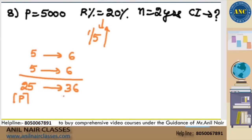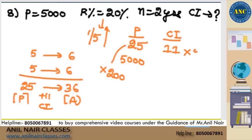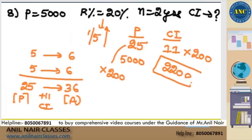So this is nothing but 25 and this is nothing but 36. Principal is 25, amount is 36, and the extra is nothing but CI. That means if the principal is 25, compound interest is 11. But according to the question, principal is 5000. So 25 into 200 is 5000, and 11 into 200 will give you 2200.